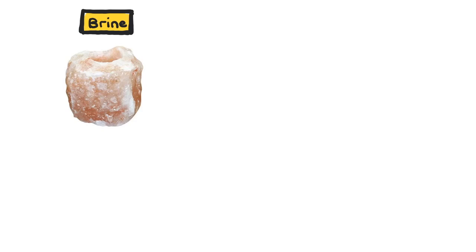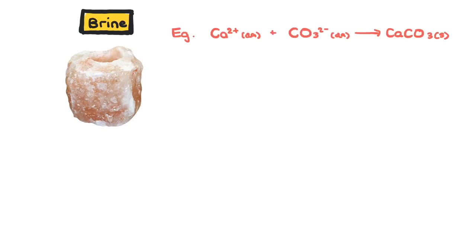Either way, the brine needs to be treated for impurities such as calcium sulfate, as these can have undesirable effects on the end product. For example, calcium ions can be removed using ionic precipitation with sodium carbonate, and magnesium ions can be removed using sodium hydroxide. These impurities are then flocculated out of solution.